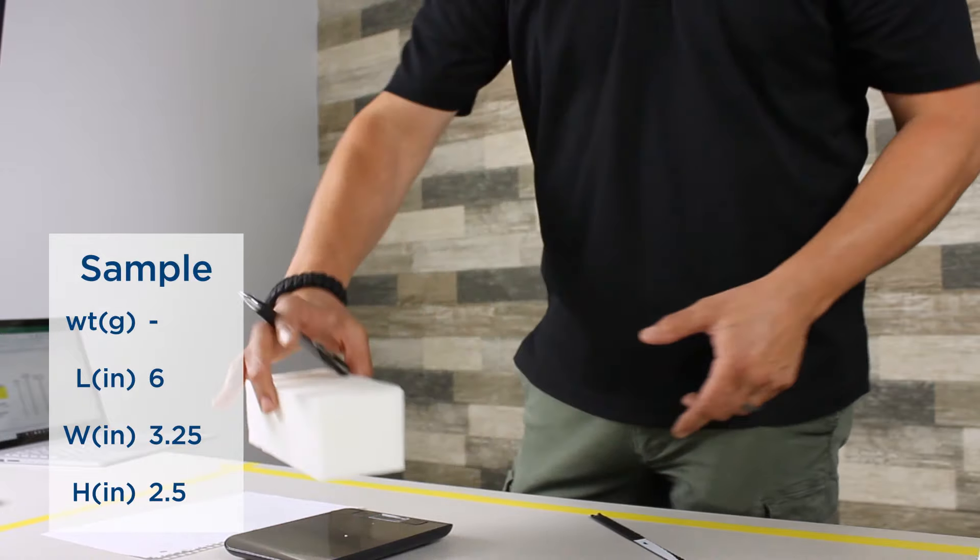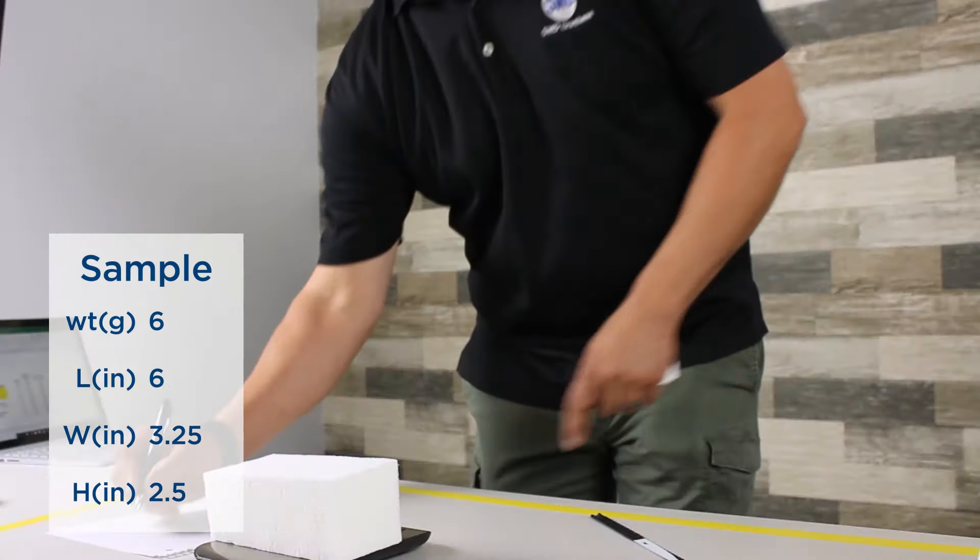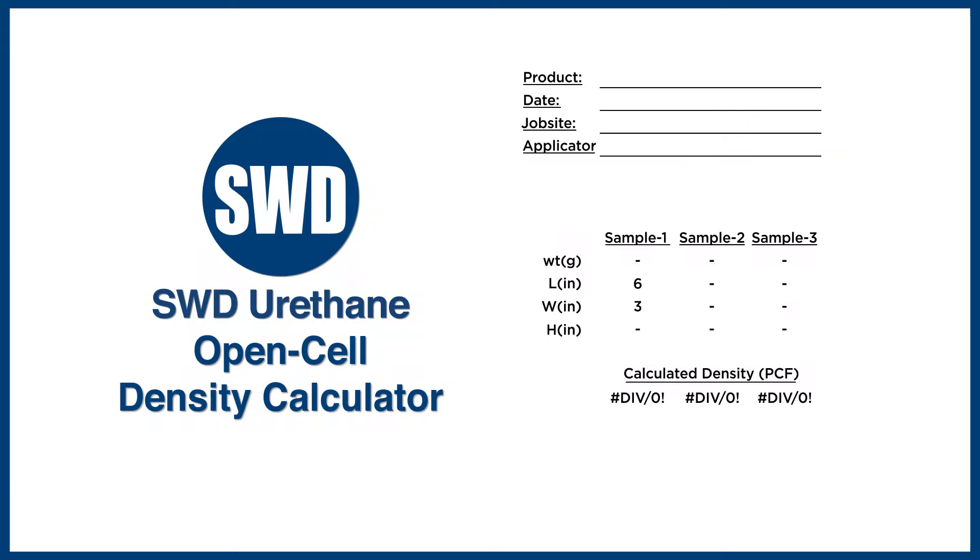Then you weigh the sample for grams. This one weighs six grams. You input your length, width, and height into our density calculator that will be part of your kit. After you enter the weight, which is six grams, the density calculator does everything for you. This sample comes in at 0.46, which is well within parameters of that open cell product.